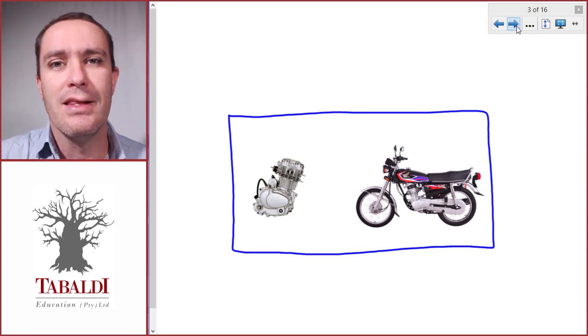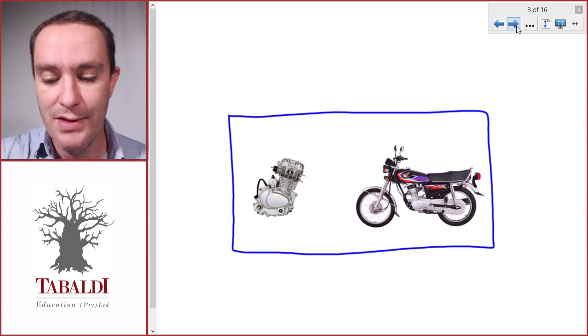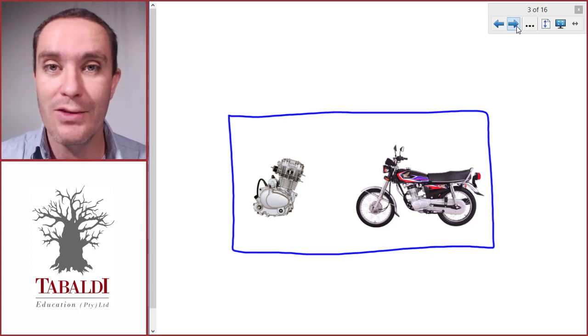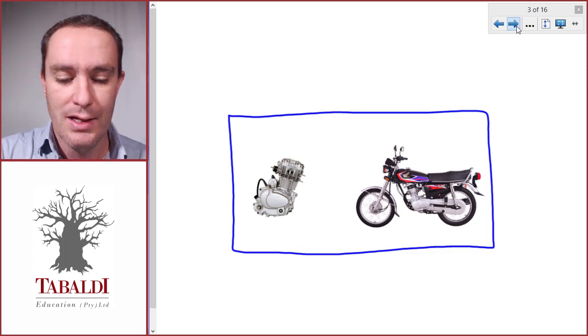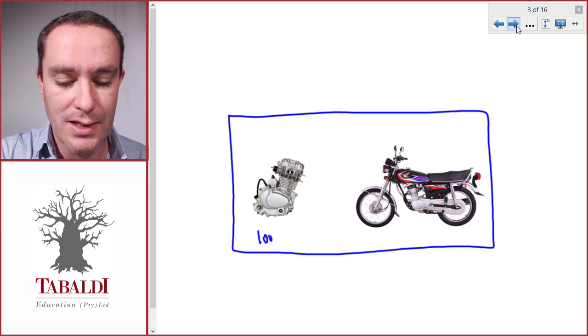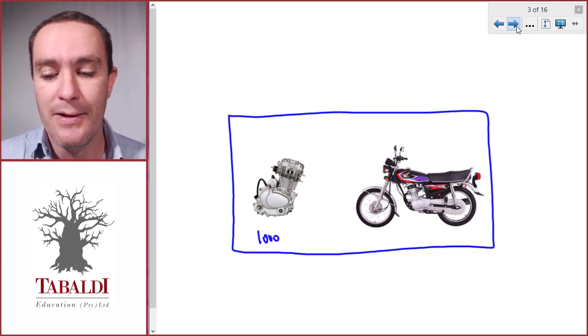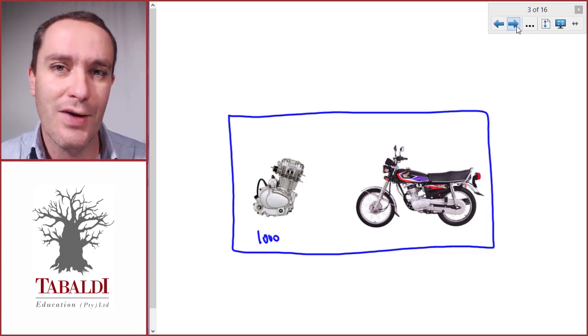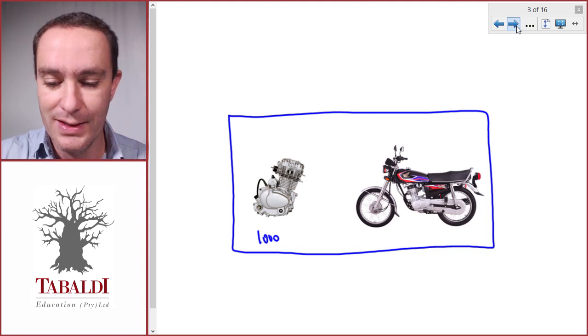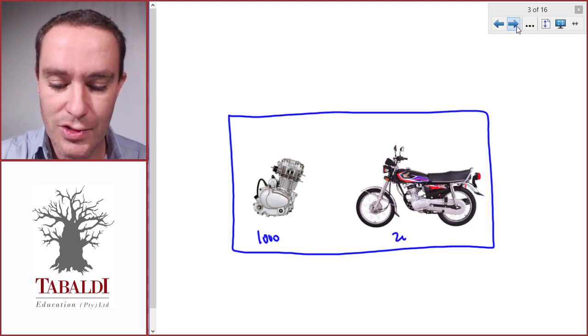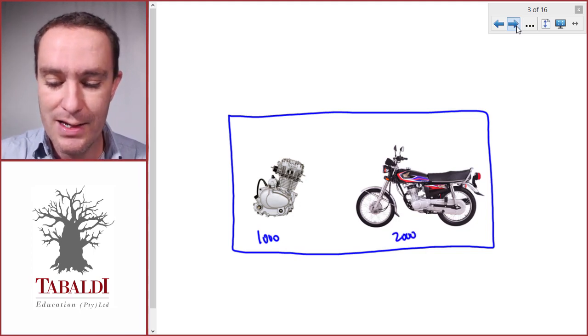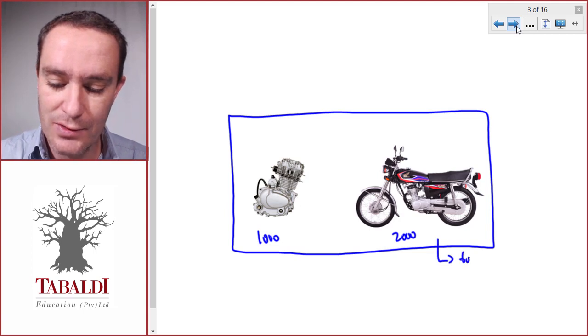We've got a company that makes bikes. They make their own engines, then fit them to the frame, wheels, etc. that they also make themselves, and sell it to customers. Let's assume the engine costs a thousand per unit to make, the rest of the bike—the frame, wheels, tank, seat, all the controls—costs two thousand, and they can sell it to outside customers for six thousand.